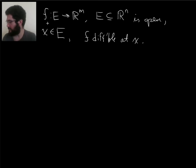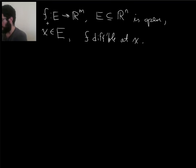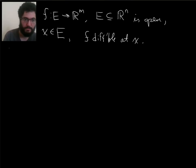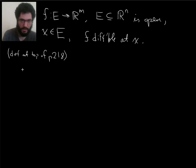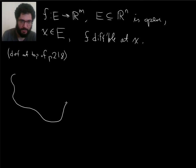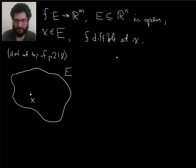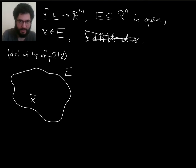Just for reference, what I'm working on is something that's defined at the top of page 218 of Rudin, if you want to have something to reference. So let's say this blob represents E and x is somewhere in E. We're assuming that f is differentiable at x — actually, we don't need this assumption for now. Let's save that for later.